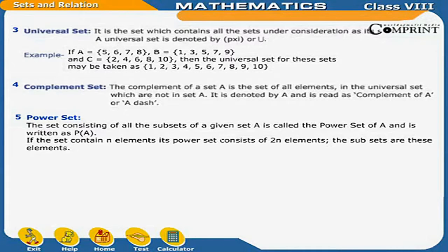Complement set: the complement of a set A is the set of all elements in the universal set which are not in set A. It is denoted by A' and is read as 'complement of A'. Power set: the set consisting of all the subsets of a given set A is called the power set of A, written as P(A). If the set contains N elements, its power set consists of 2^N elements.